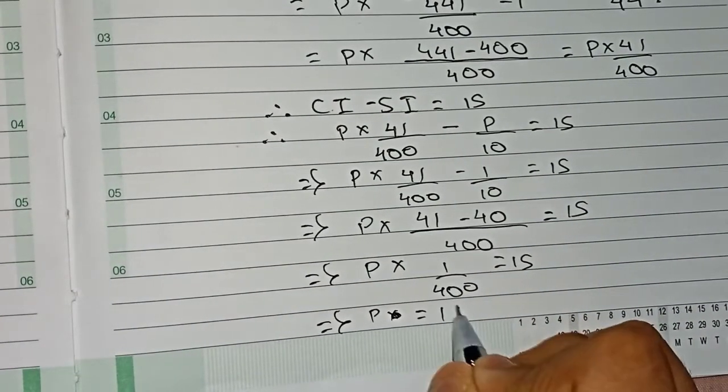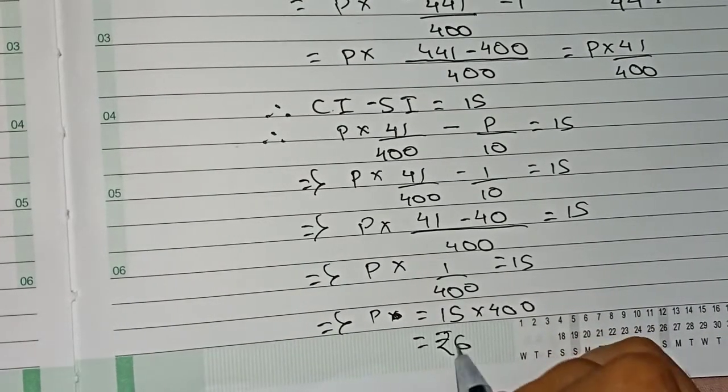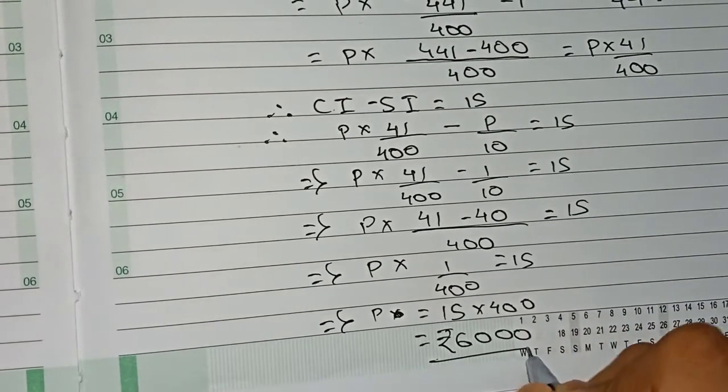P equals 15 × 400, that equals rupees 6000. So therefore our principle for this question will be 6000. This is our final answer for this question.